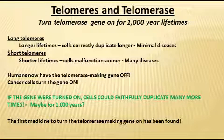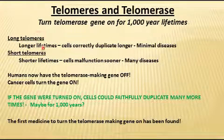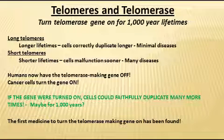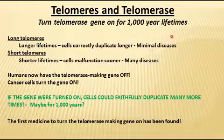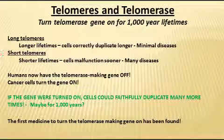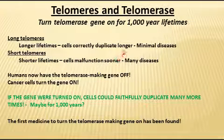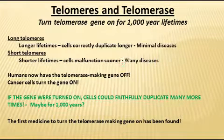Studies of telomere lengths in people — and it is possible if you have a blood test done to get the average length of the telomeres in your body — have found that longer telomeres correlate with longer lives. Some individuals who live to be 95 or 100 years old have long telomeres that are maintained more than in the average population, allowing their cells to reproduce accurately more often, resulting in a longer life with fewer diseases associated with incorrectly copied genetic material. The opposite has also been found: people with short telomeres have shorter lifetimes because their cells malfunction sooner, leading to many diseases which can often be fatal.